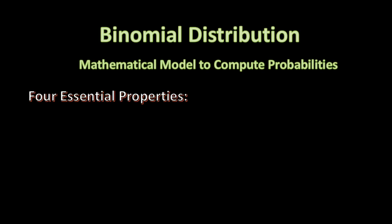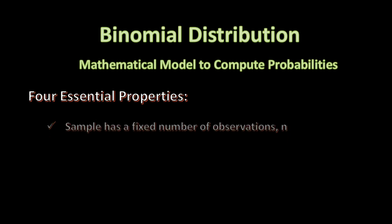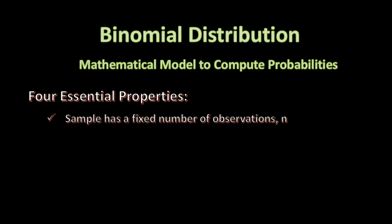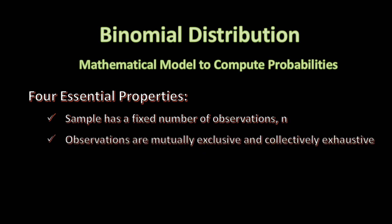First, the sample must consist of a fixed number of observations referred to as n. Next, each observation is classified into one of two mutually exclusive and collectively exhaustive categories,